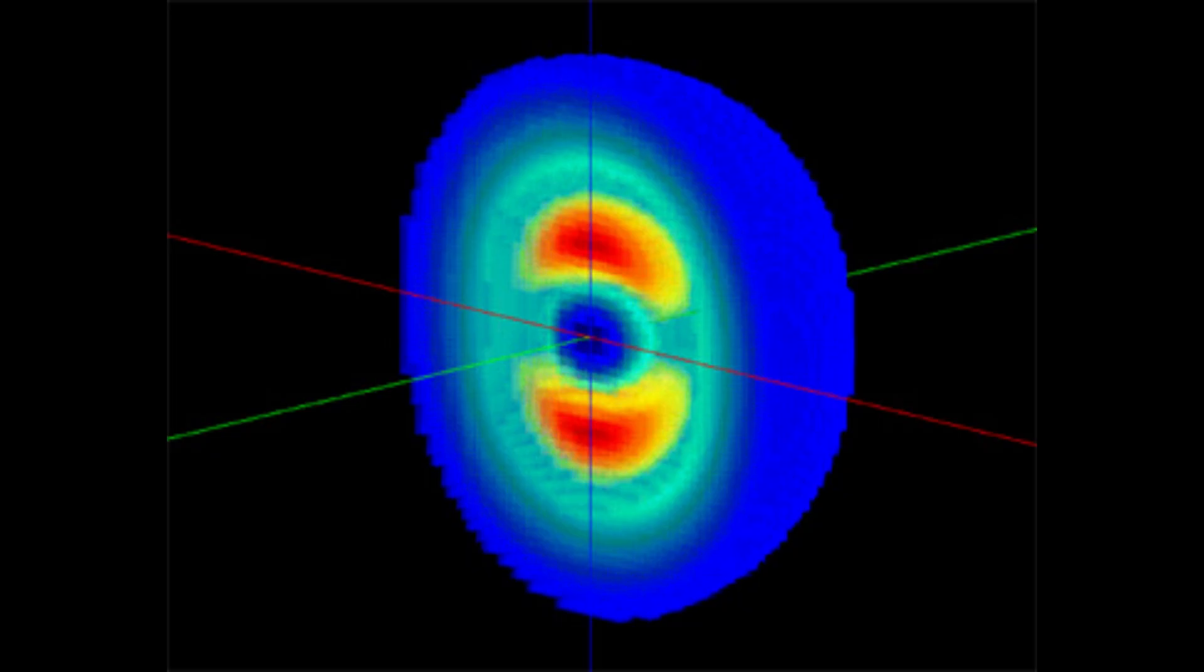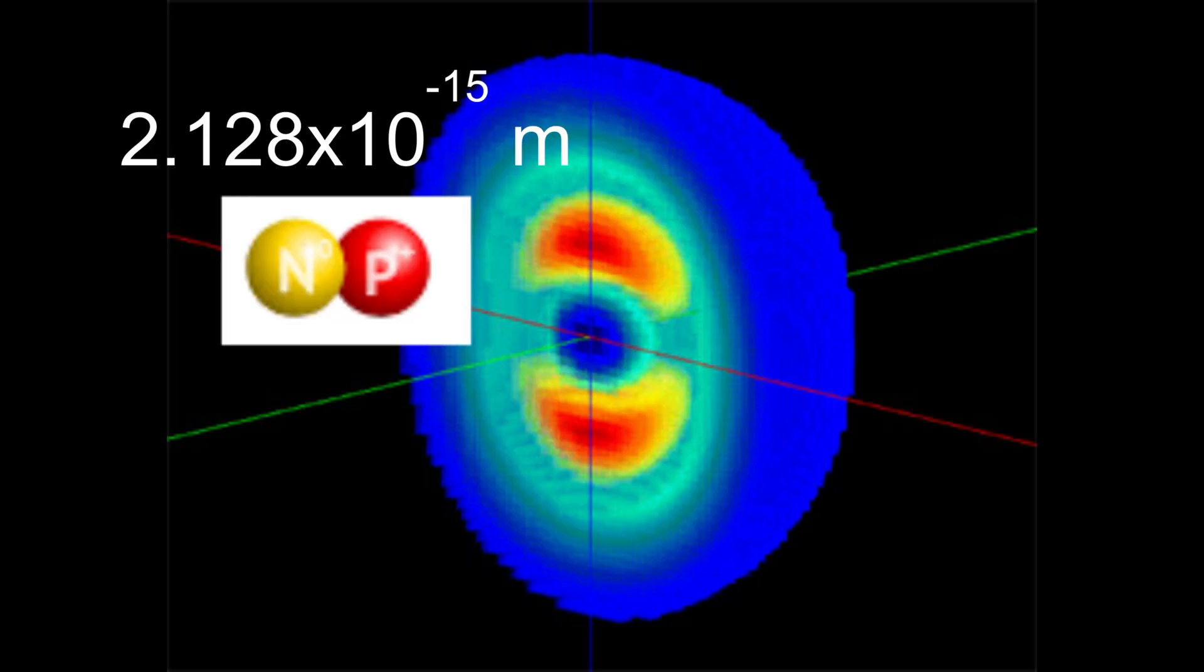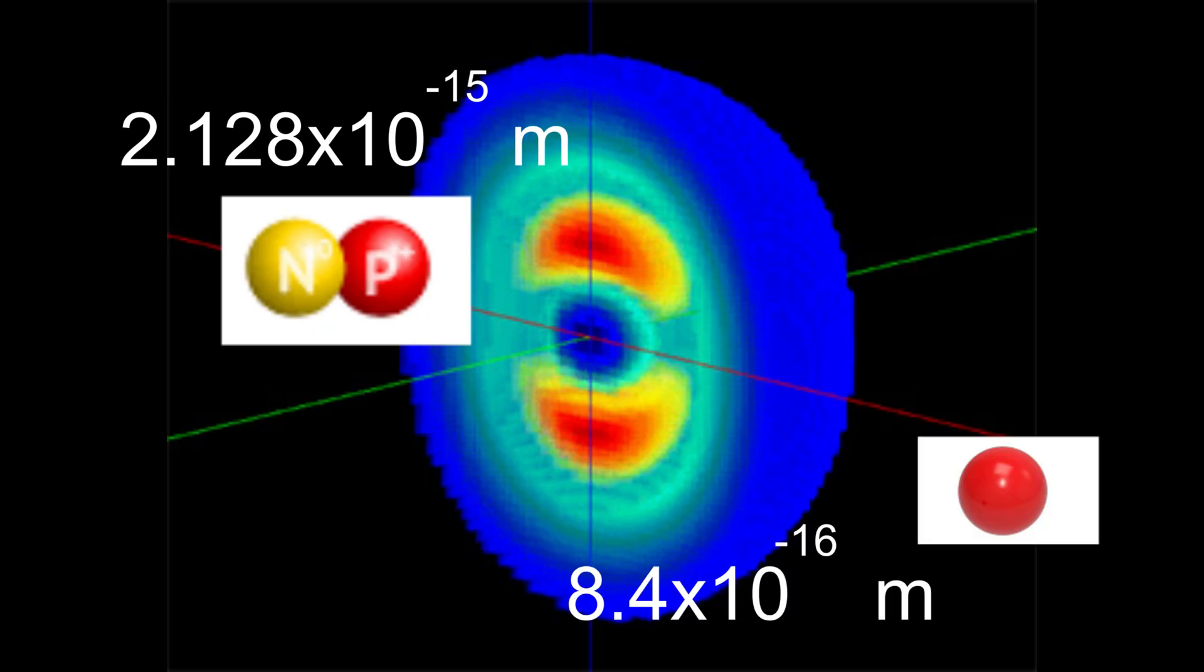And using electron scattering, we can measure the radius of the deuteron, the charge radius. The charge radius being 2.1 times 10 to the negative 15th meter compared to 8.4 times 10 to the negative 16th meters for a single proton. So deuteron is like 2.5 times the charge radius.